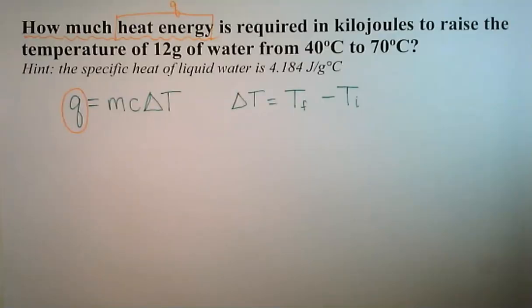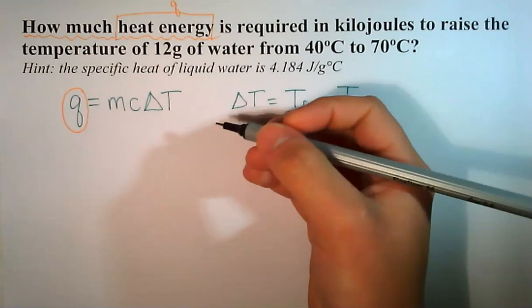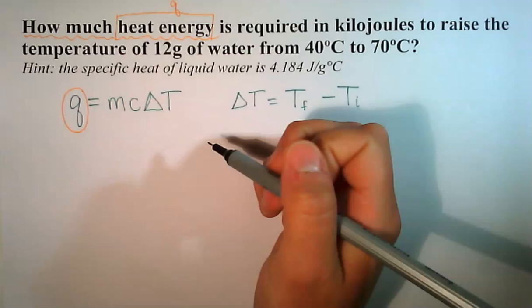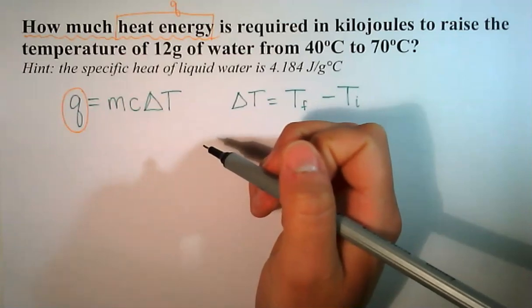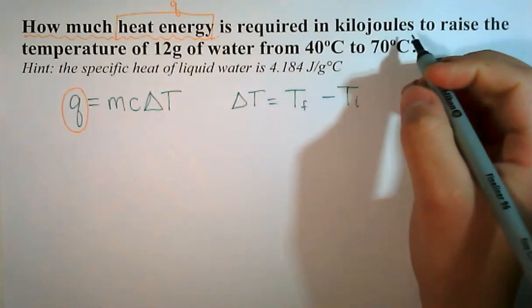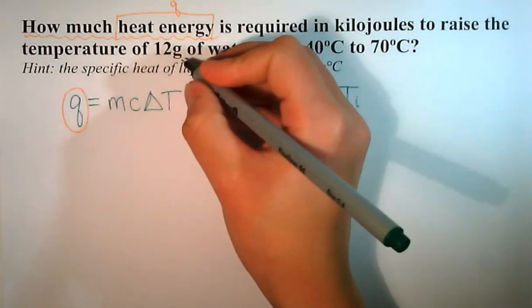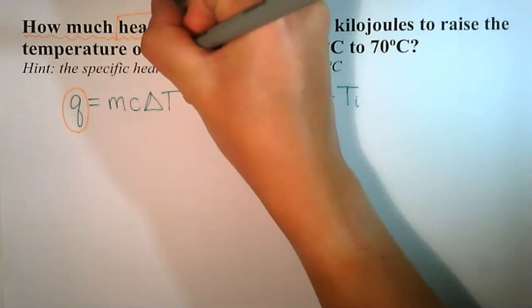We don't need to rearrange our equation, we just need to substitute in the mass, the specific heat, and the change in temperature to find our value for Q. So let's find those other variables. Required in kilojoules to raise the temperature of 12 grams, so grams, that would be our mass.